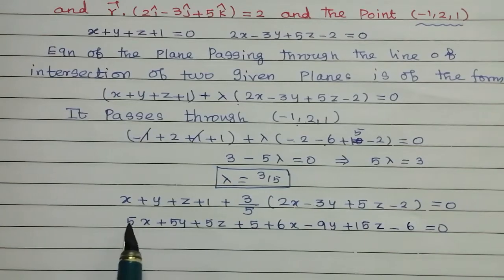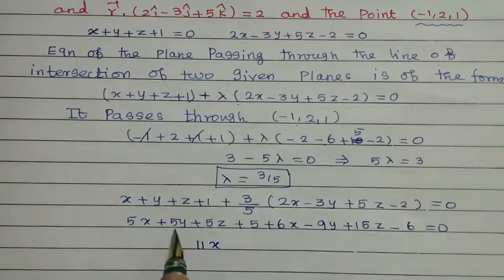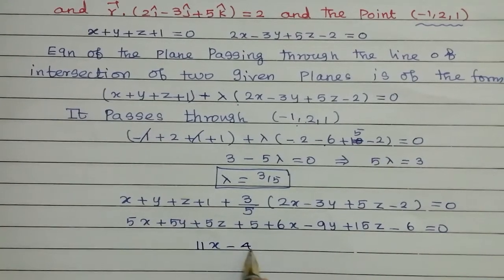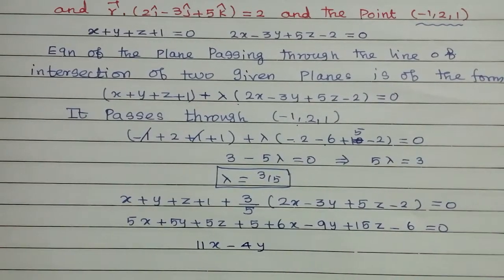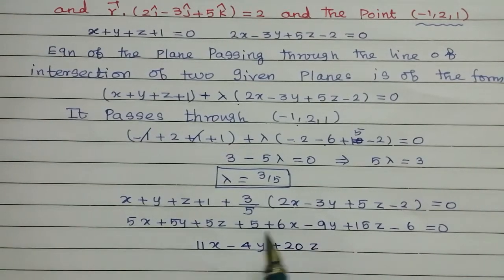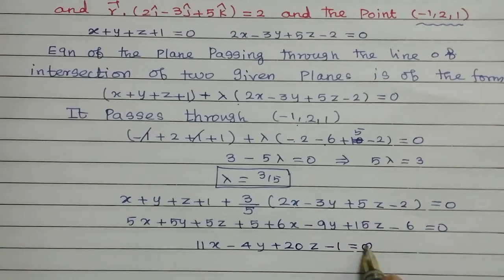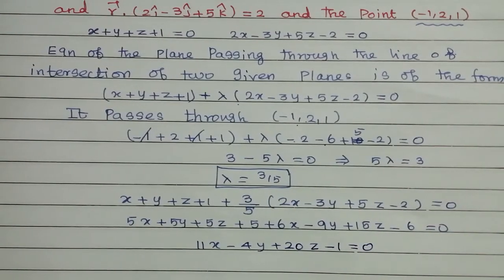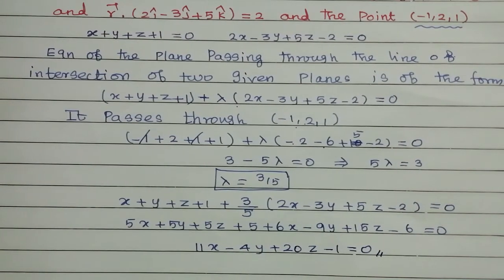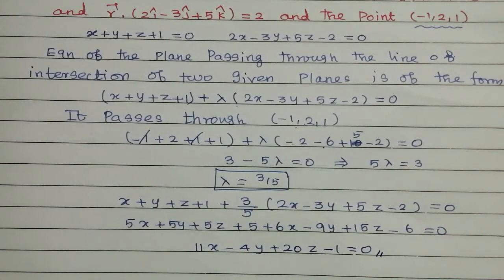Simplifying: 5 plus 6 gives 11x; 5 minus 9 gives minus 4y; 5z plus 15z gives 20z; and the constant 5 minus 6 gives minus 1, equal to 0. So the required equation of the plane is 11x minus 4y plus 20z minus 1 equal to 0. That is all. If you liked this video, please like, share, and subscribe. Thank you.